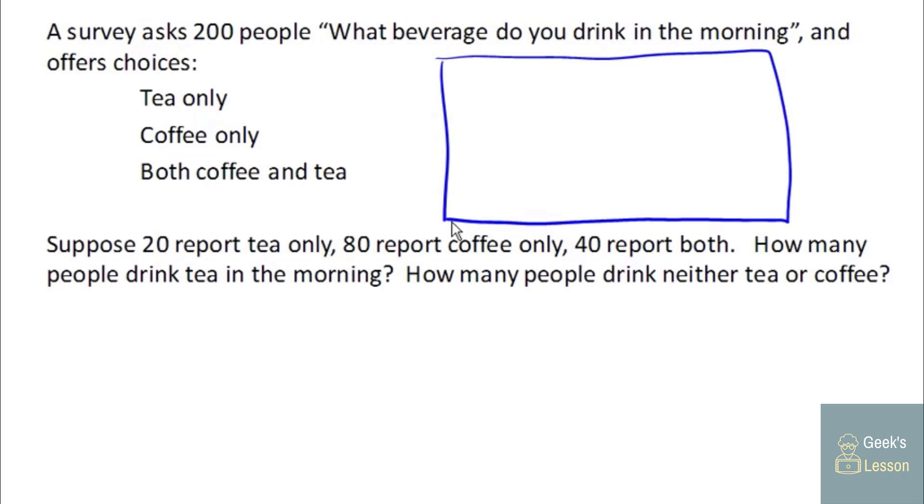So we're going to imagine the universal set. This is everybody. Remember there's 200 people in this set. And we're going to draw a couple circles here. The first circle is going to be for coffee, and the second circle is going to be for tea. Now we can start introducing the information we know. We know that 20 people report tea only, so they would be in this region here. The part that only includes tea does not include C. 80 people report coffee only. 40 people report both, so they will be in the intersection of those two sets. And notice that all together we have 140 people there. We knew that there was 200 people total, and so that leaves 60 people outside of those two sets.